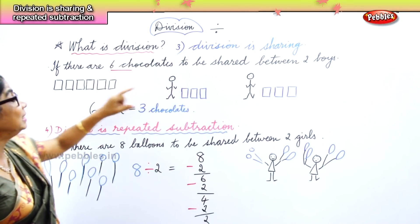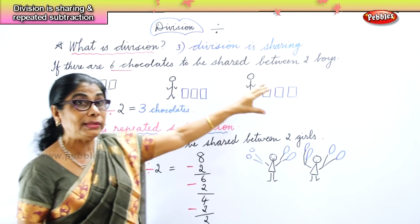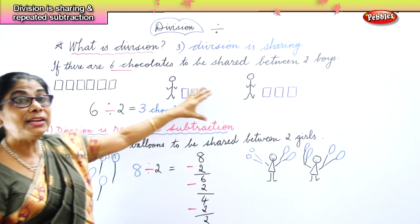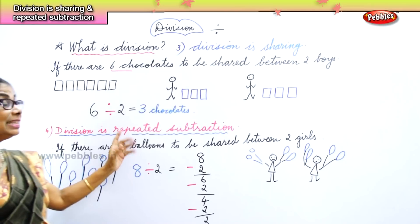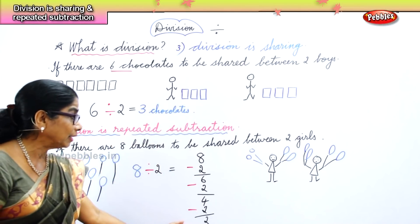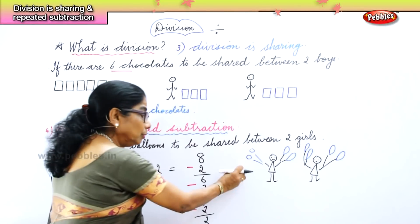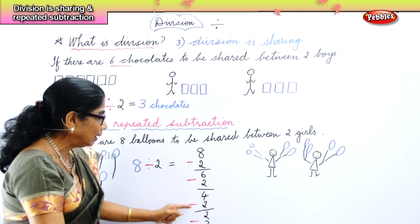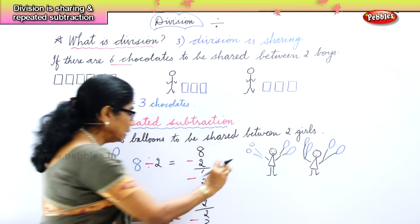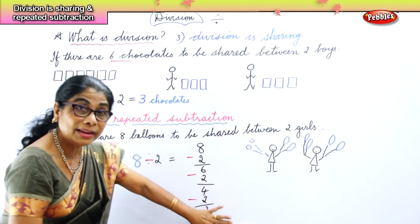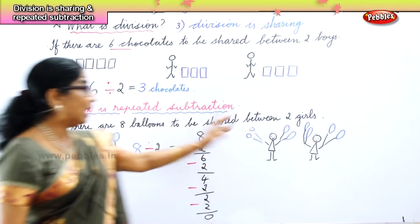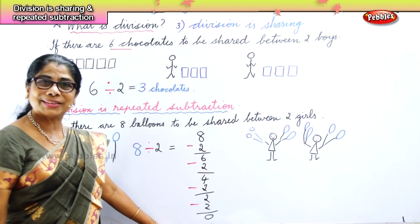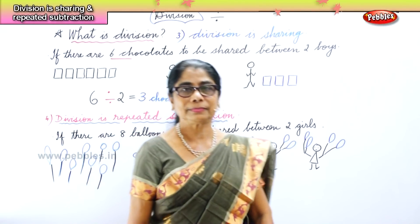So we have covered two concepts here. Division is equal sharing — there are two boys and six bars of chocolate, each gets three. Division is repeated subtraction — you give two balloons, minus two again you give two to this girl, minus two again you give two to this girl, and finally minus two you give the last two away and you get zero.